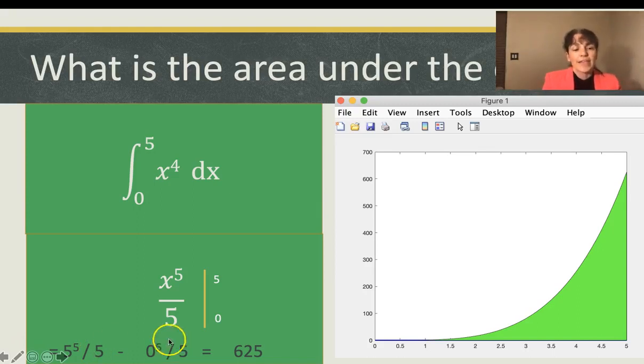So x to the power of five divided by five. What is that? Minus and then zero to the power of five. This is going to just be zero and we get 625. So that's the right answer.